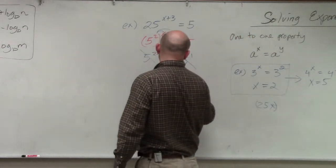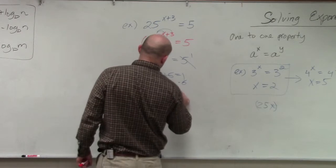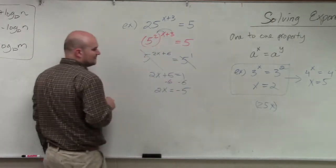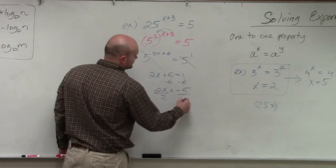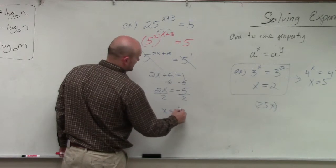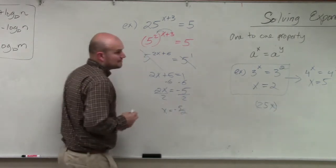Now I have 2x plus 6 equals 1, and now we can go ahead and solve. So I subtract 6, subtract 6, 2x equals negative 5, divide by 2, divide by 2, x equals negative 5 halves.